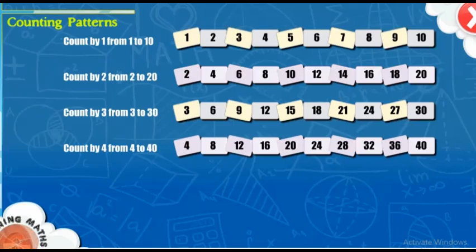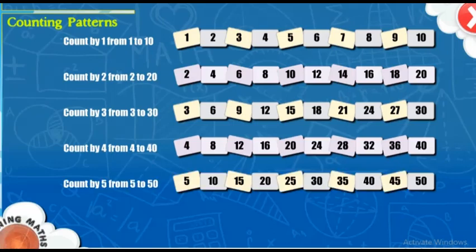40. Count by 5 from 5 to 50. 5, 10, 15, 20, 25, 30, 35, 40, 45.